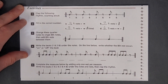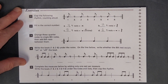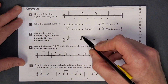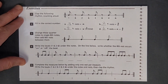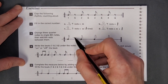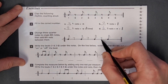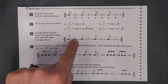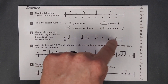Number three: change these quarter notes to single eighth notes, then add eighth rests between them. Basically you just draw a flag on each of these — now they're eighth notes, because an eighth note is just a quarter note with a flag — then draw your little eighth rests in between. And there you go: eighth note, eighth rest, eighth note, eighth rest, eighth note, eighth note, eighth note, eighth rest.